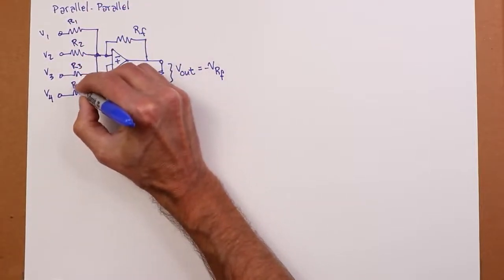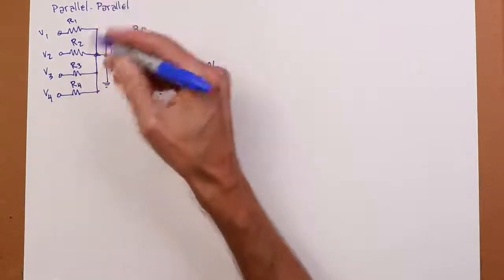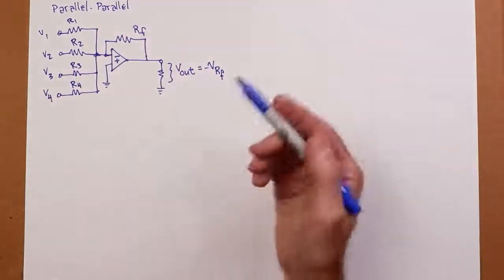All right. So you could have two channels. You could have three channels, four channels, five channels. So I'm just drawing four. Well, here's what ends up happening.